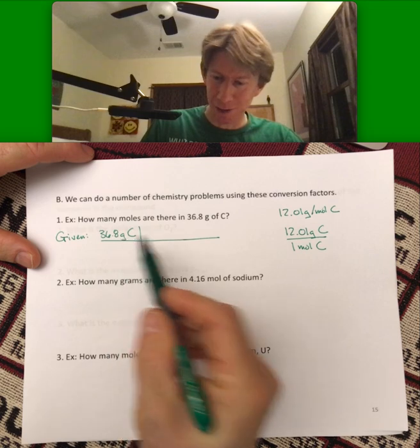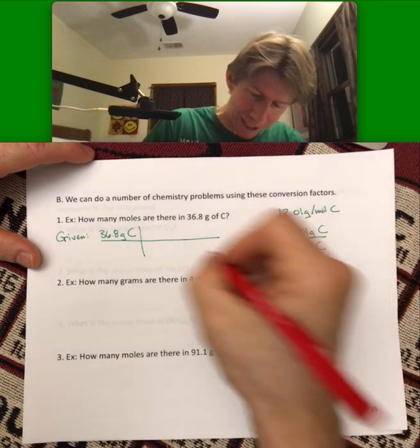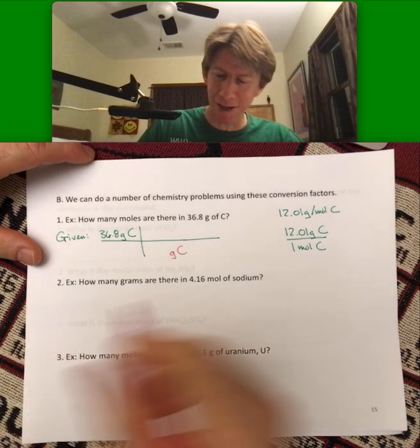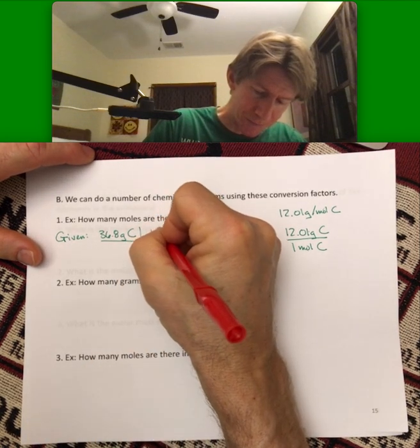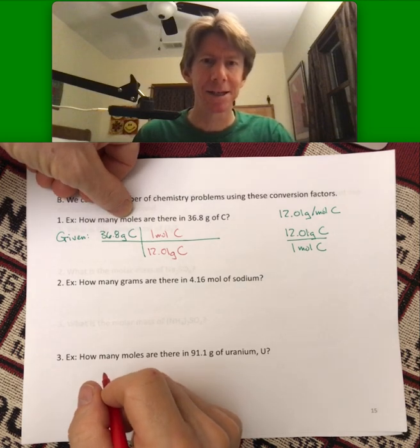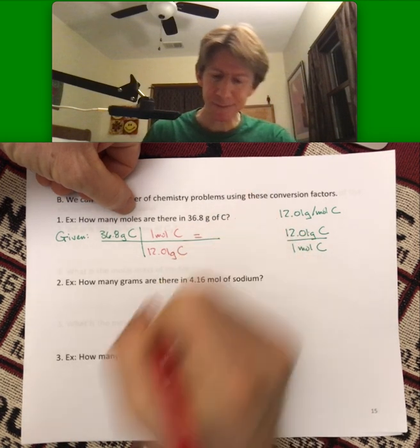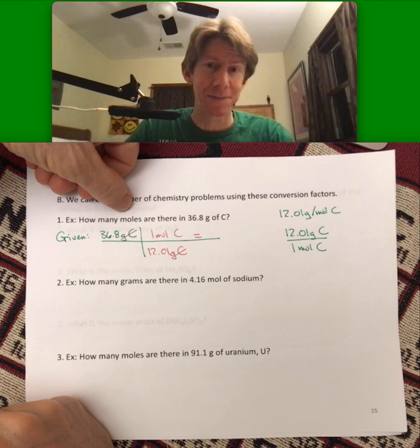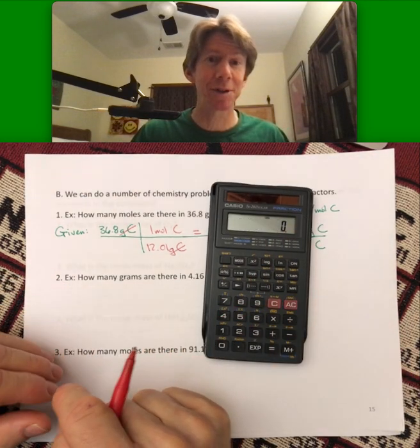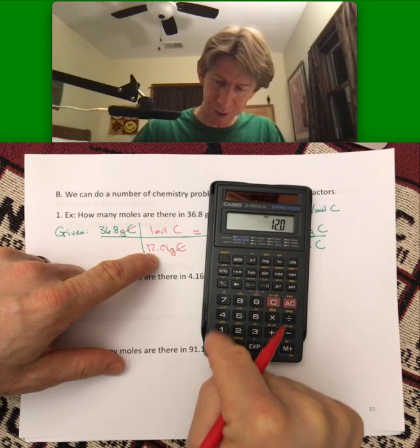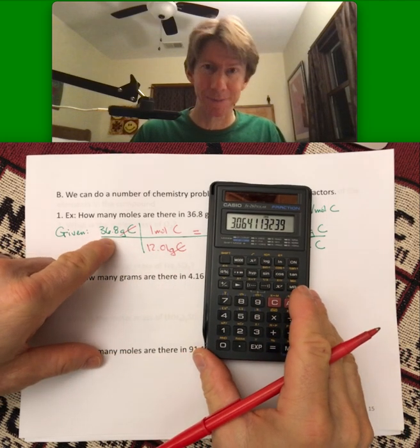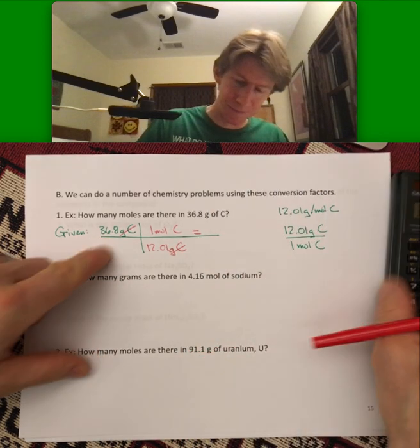I have grams on top, so I'm going to use this unit conversion factor. I know I want grams of carbon on the bottom, and that means I have to flip this and put the 12.01 grams of carbon on the bottom and the one mole of carbon on top. I'm guided by the problem. I want moles for this. And, if I cancel my units, I have moles as the answer. So now all that's over is the math. It's going to be 36.8 divided by 12.01, and I get to 3 sig figs, 3.06